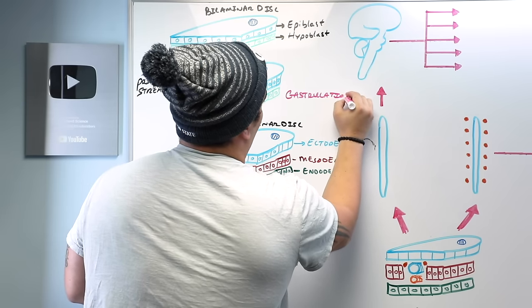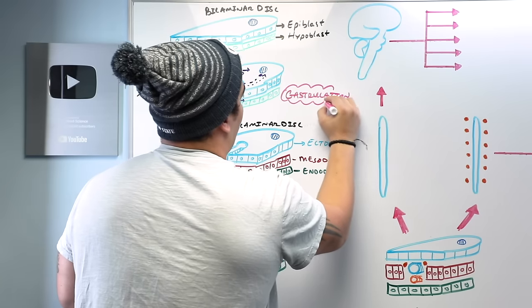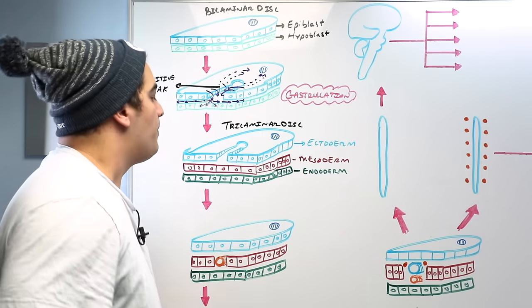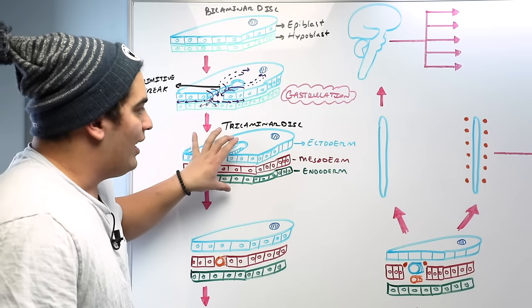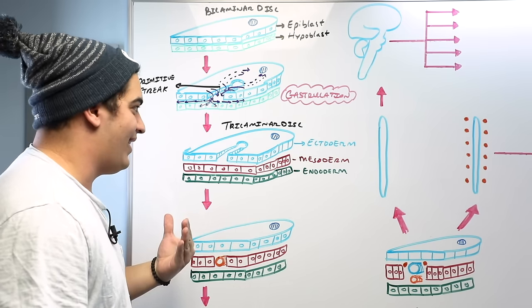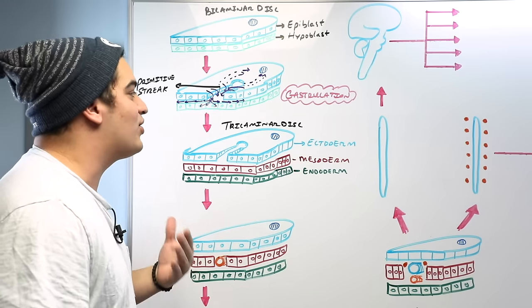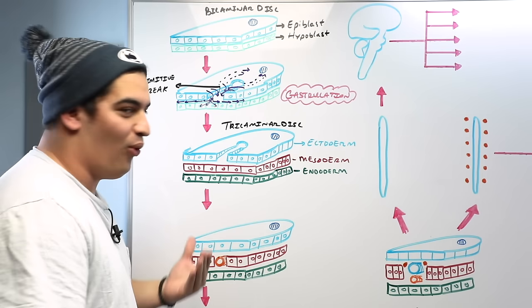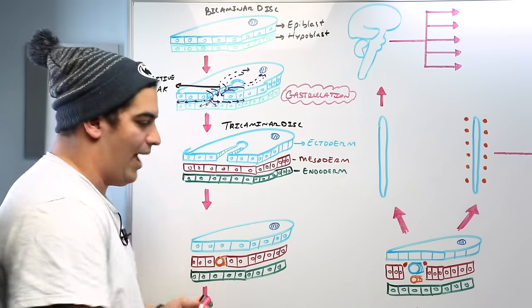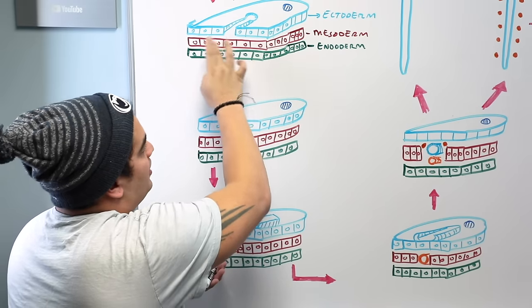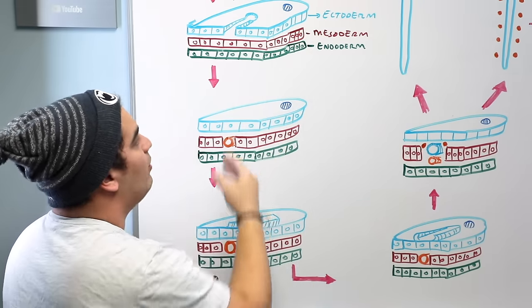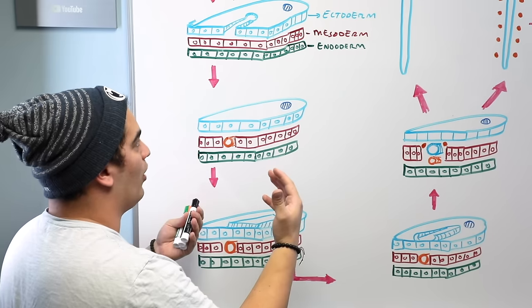We've formed our trilaminar disc consisting of ectoderm, mesoderm, and endoderm. Now we need to form the notochord. From the trilaminar disc, the next step is making the notochord.